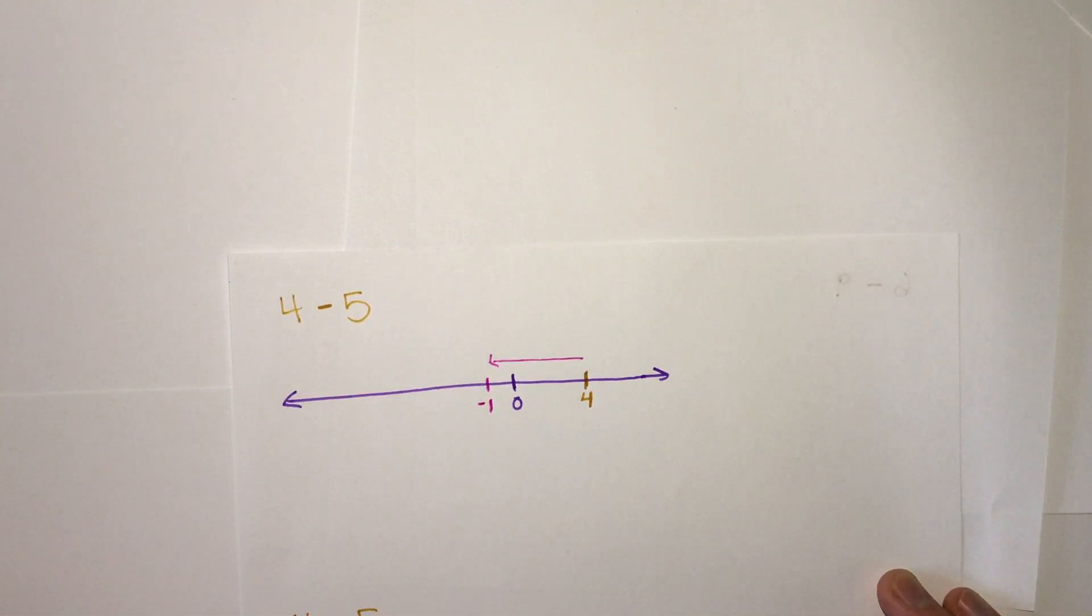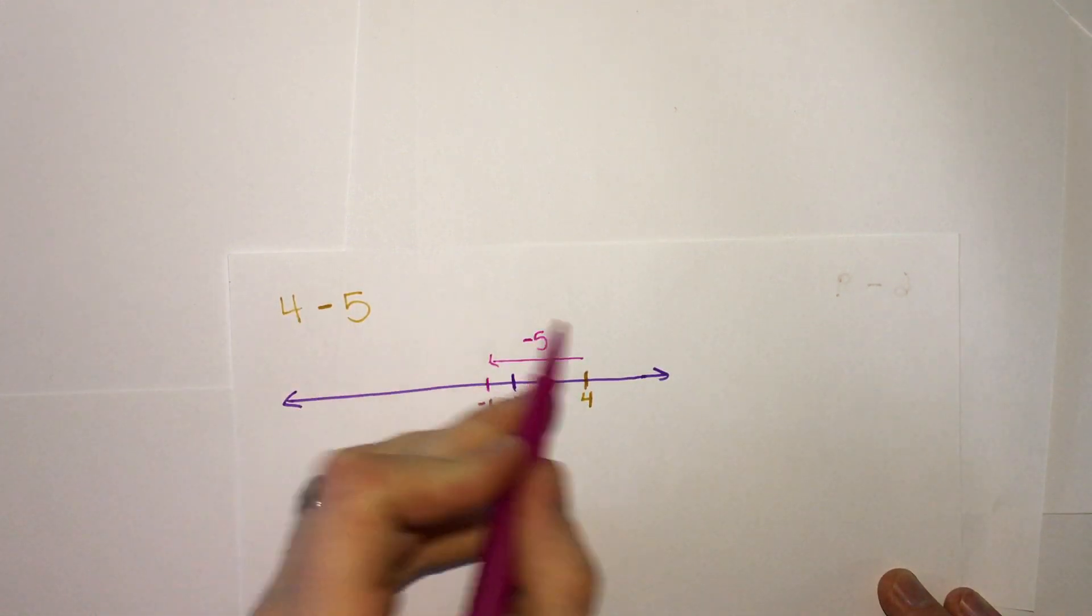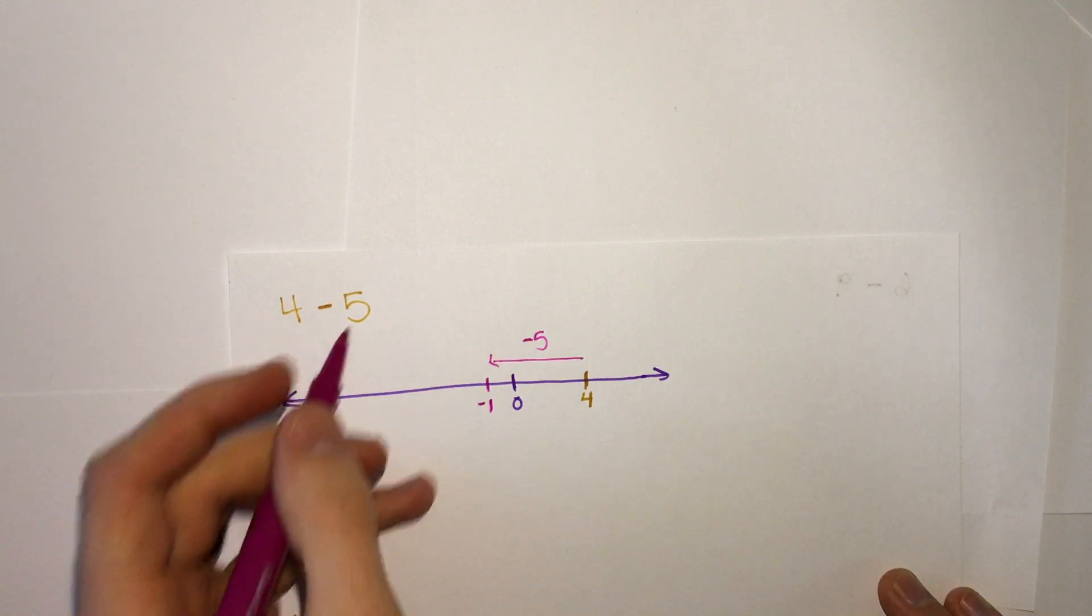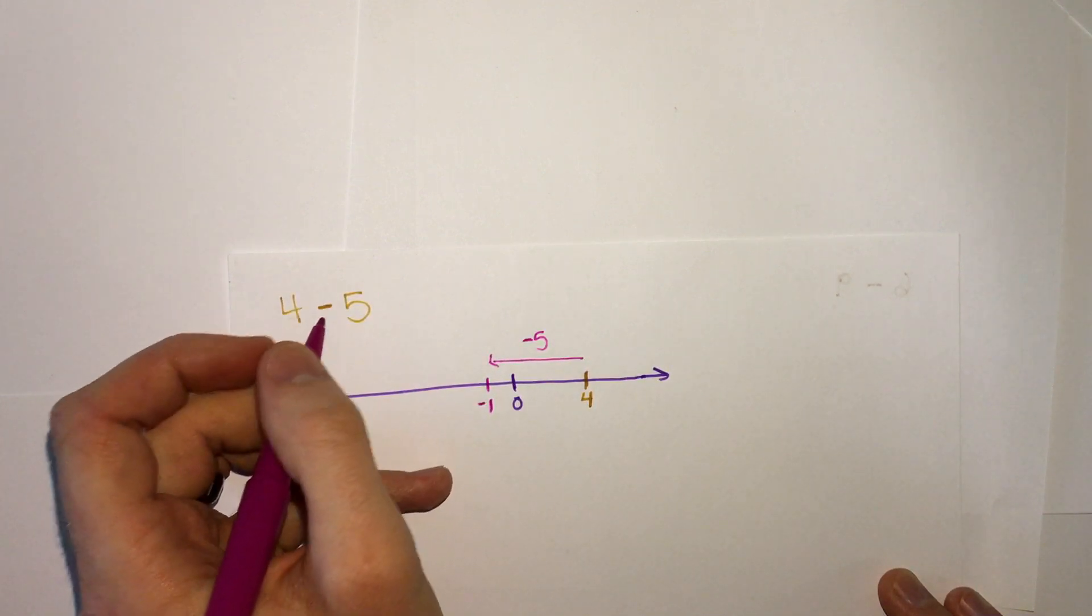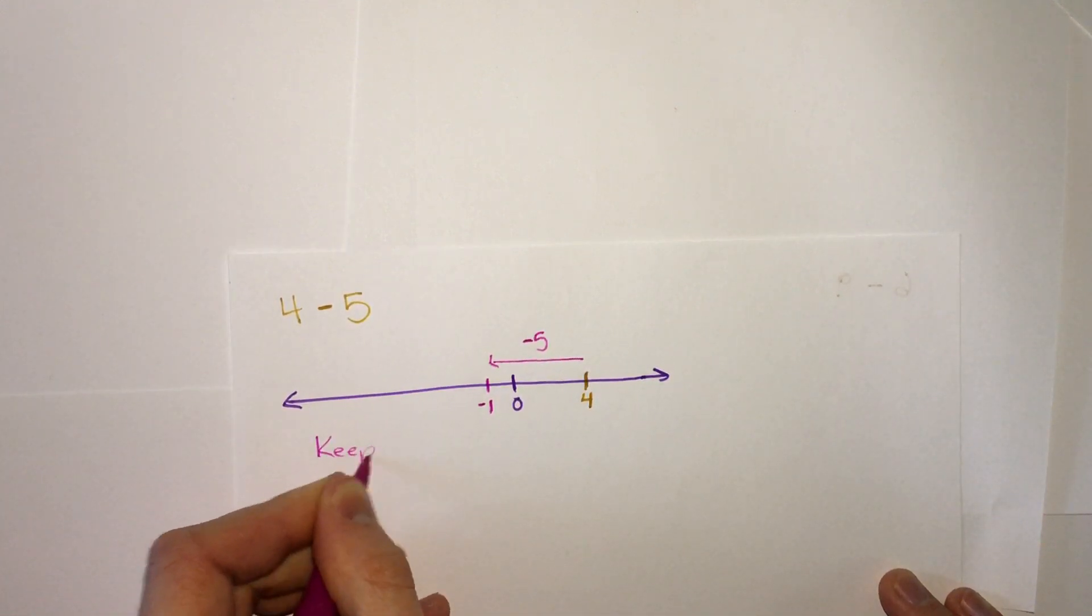Now when we are subtracting 5, what we're really doing is the opposite of adding 5. So something that we can do for all subtraction is a phrase called keep, change, change.